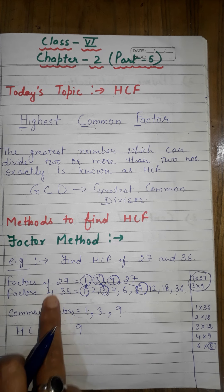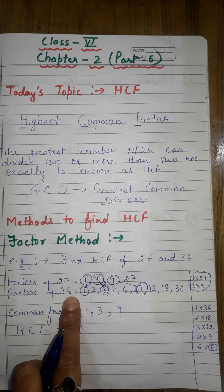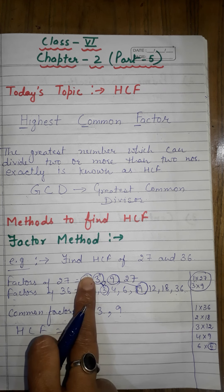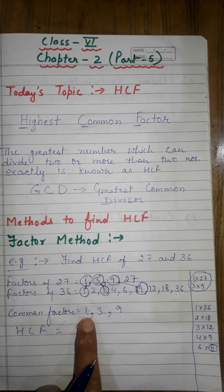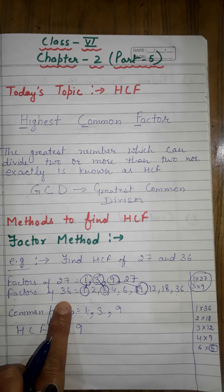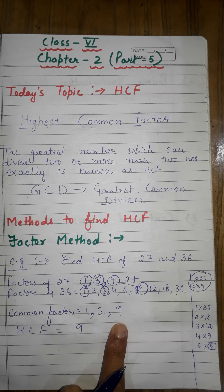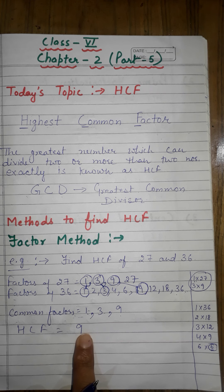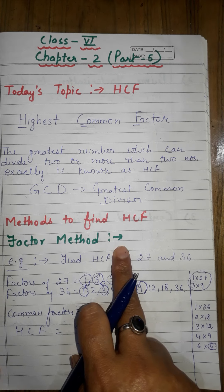Now we find the common factors of both 27 and 36. One is a factor of both; three is a factor of both; nine is a factor of both. So the common factors are 1, 3, and 9. But we need the highest common factor — the greatest one — which is 9. So 9 is the Highest Common Factor of 27 and 36.